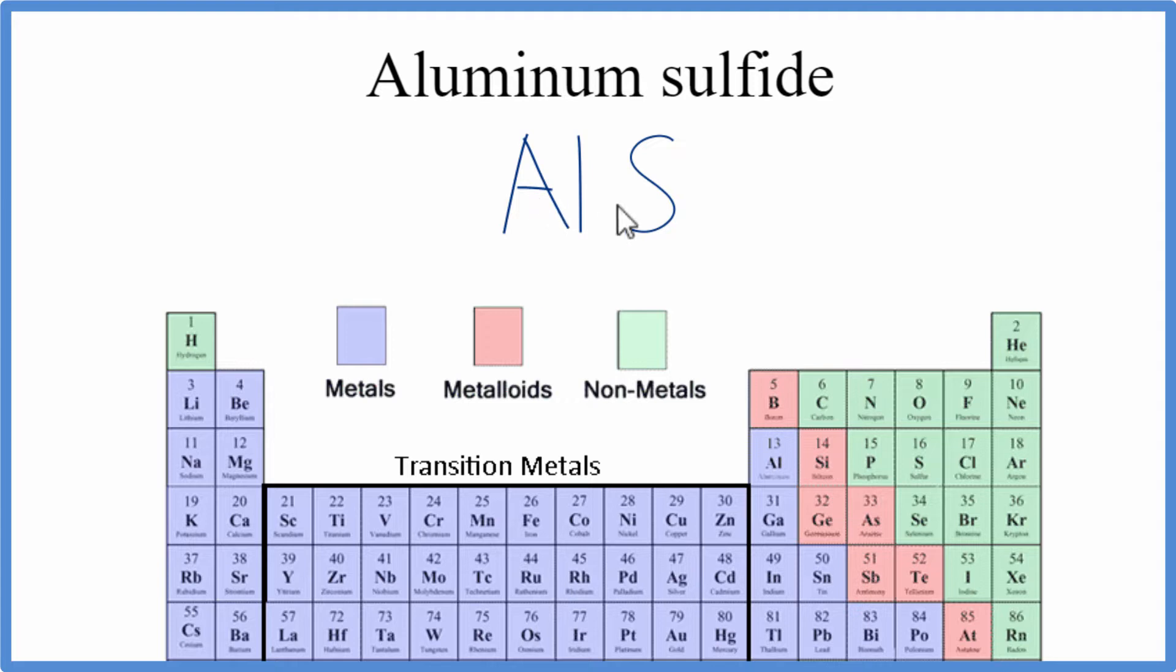Aluminum, that's a metal, then sulfur, that's a nonmetal. So we have a metal and a nonmetal, we have an ionic compound.